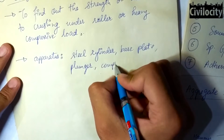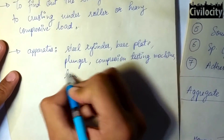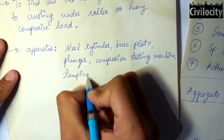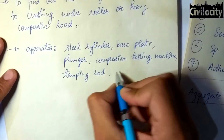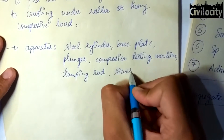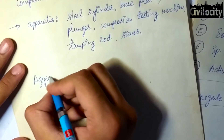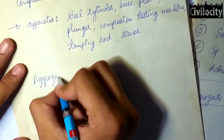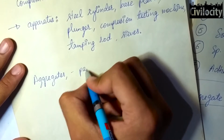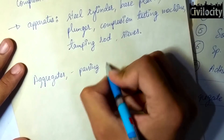The apparatus for this test consists of a steel cylinder, base plate, plunger, compression testing machine, cylindrical measure, tamping rod, and sieves. Strength is the ability of an aggregate to withstand stresses or crushing load under a gradually applied compressive load.